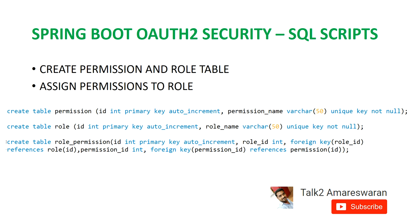Now for the SQL scripts. First we have to create the permission and role tables. This is the SQL script to create the permission and role tables. Then we have to assign permissions to roles, so I created the third table: role_permission. This is the SQL script to create the permission, role, and role_permission tables.